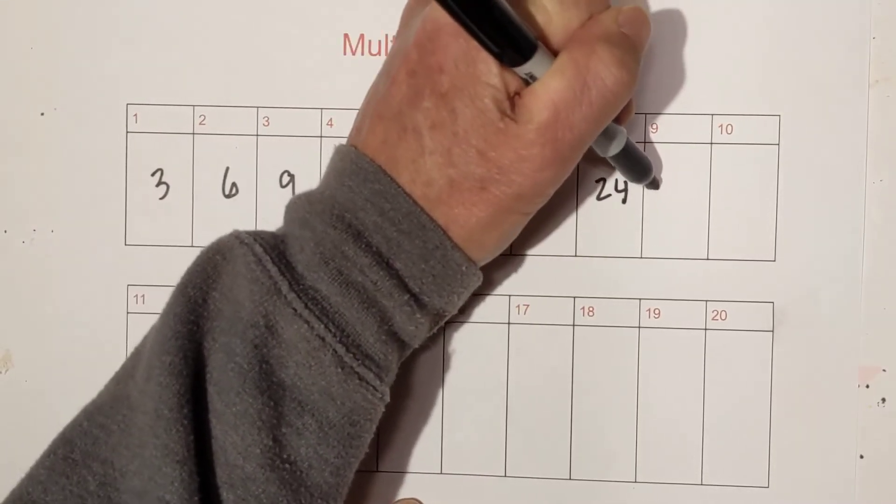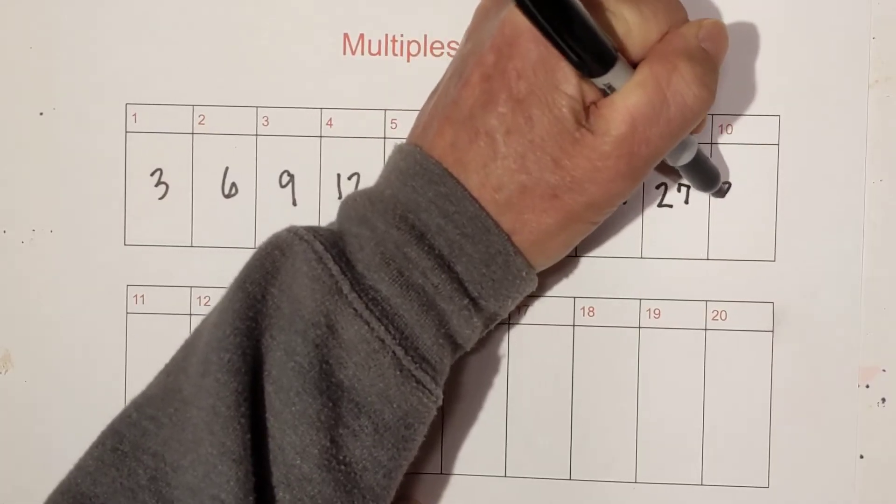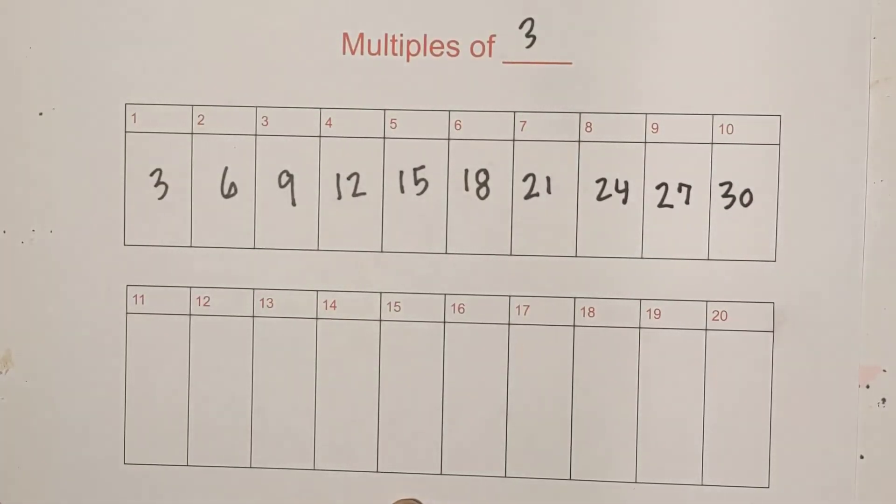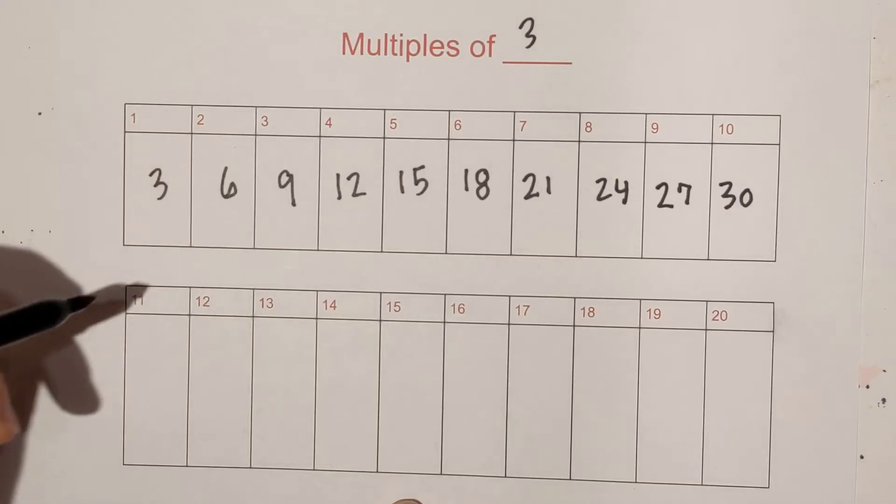24, 27, and 30. And now basically this pattern repeats over again. We just start at 30.